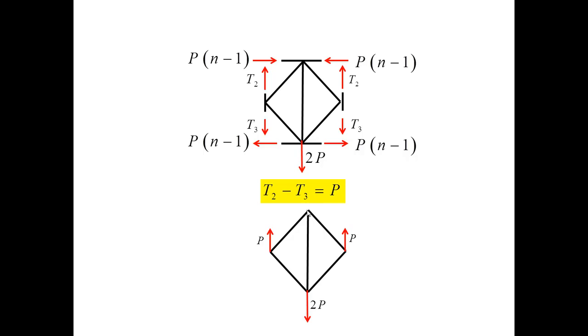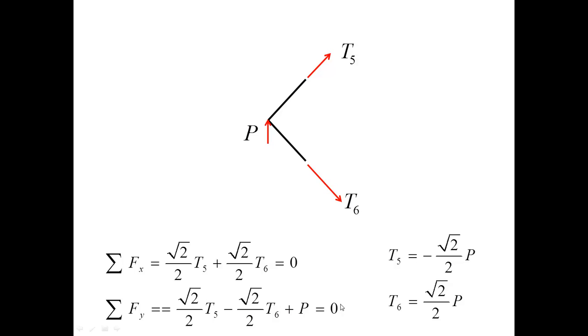Now I'm ready to analyze this unit. First, I will start with the free body diagram that involves a side node. Both forces are shown as tensions. If I analyze the force equilibrium equation, I obtain that the force T5 is compression and the force T6 is tension, and the magnitude of both forces is square root of 2 over 2 times P.